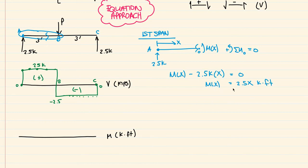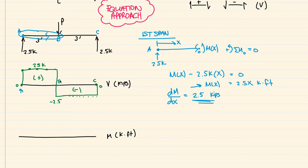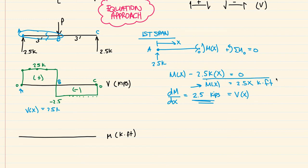Here's something interesting. If we differentiate this moment equation for span AB — if I take dM/dx — differentiating 2.5x with respect to x gives us just 2.5 kips. That's interesting, because the shear between point A and B — the equation for that shear was V of x equal to 2.5 kips. This tells us that the shear equation is the slope of this moment equation. We'll use that information in more complex examples later to figure out what our moment diagram should look like. Anyway, the moment equation 2.5x kip-feet represents the moment between A and B.